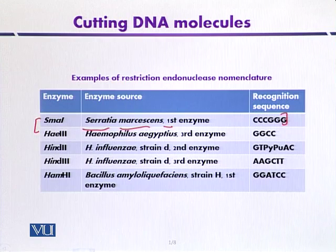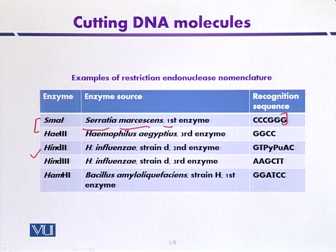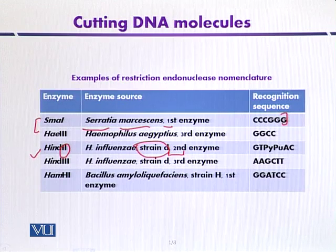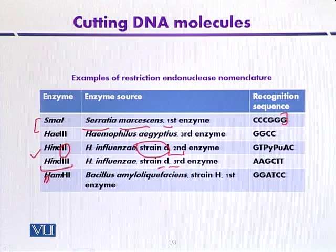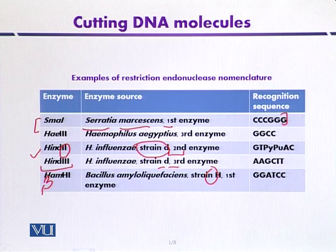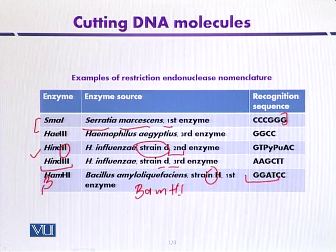Another common example is HinD II and HinD III, isolated from Haemophilus influenzae — H and N from the genus and specific epithet, D from strain D, and the Roman numeral indicating which enzyme it is. Another important enzyme is BamHI — B from Bacillus, AM from amyloliquefaciens, H from strain H, and it is the first enzyme isolated. Its recognition sequence is the six base pair sequence GGATCC.